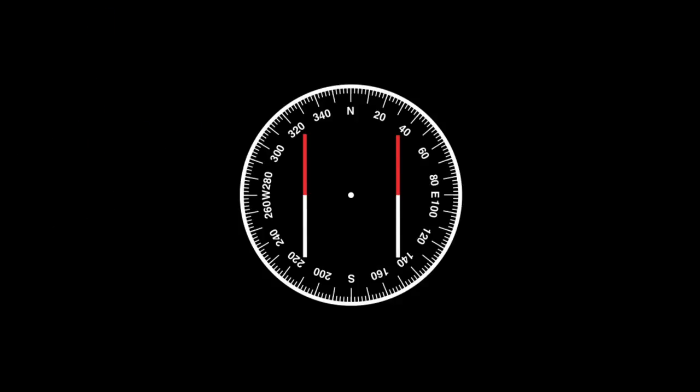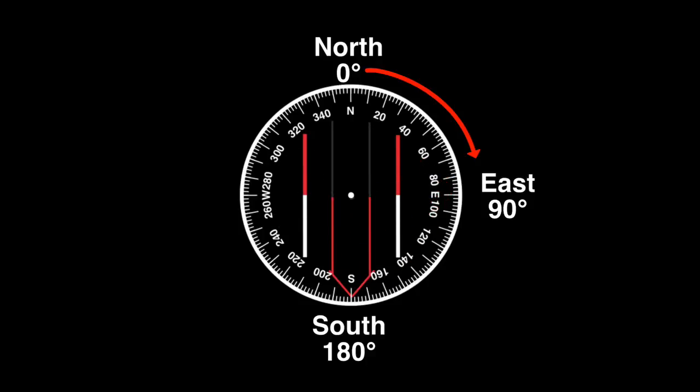The full circle is divided into 360 equal parts. North is defined as the starting point for the measurement and assigned the value of zero degrees. The measured angle increases in a clockwise direction. The cardinal direction of east has a value of 90 degrees, south is at 180 degrees, west is at 270 degrees, and we return to north at 360 degrees.